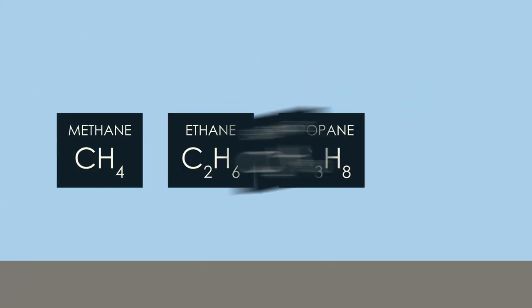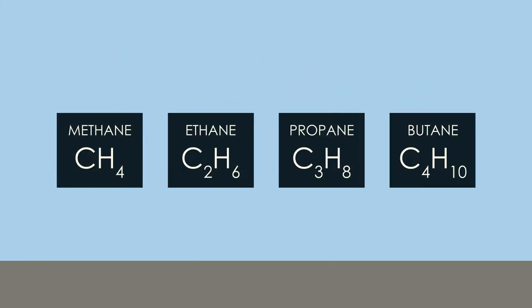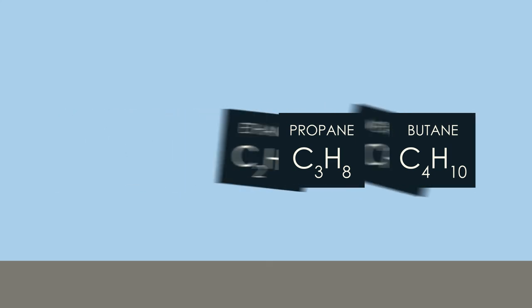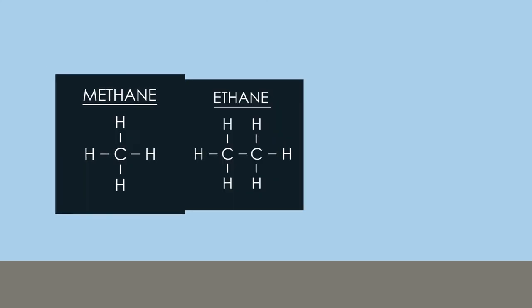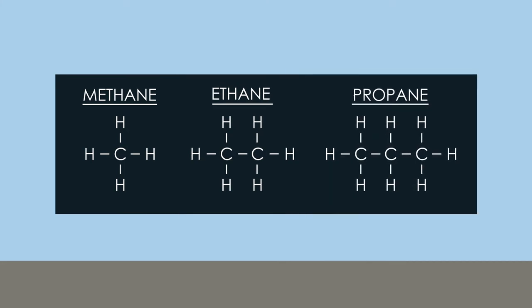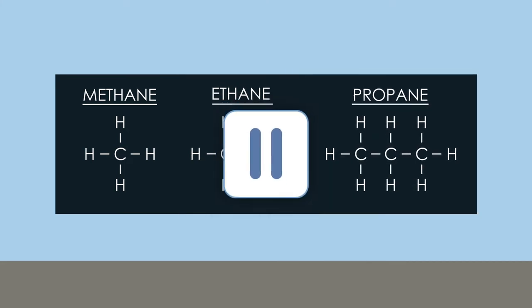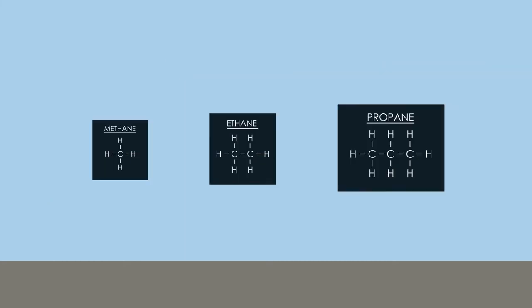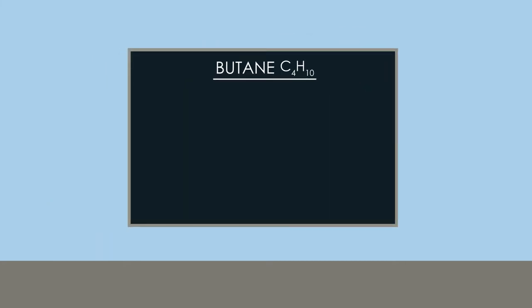Here are the formulae of the first four alkanes: methane, ethane, propane and butane. And here are the structural formulae of the first three. Pause the video and draw out the structural formula for butane.